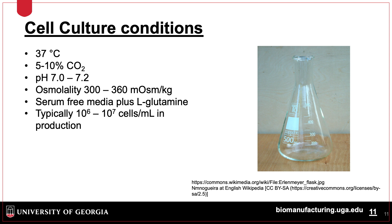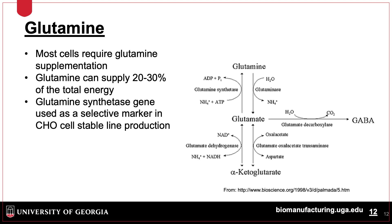Serum-free media is typically used to reduce use of animal products, to support growth in the range of 10^6 to 10^7 cells per milliliter. Glutamine is a major nutrient for many mammalian cells and can supply both the carbon and nitrogen for the cell, providing up to 30% of the energy required. Glutamine synthetase enzyme is used as a selectable marker for production of recombinant protein in cells knocked out for this activity.